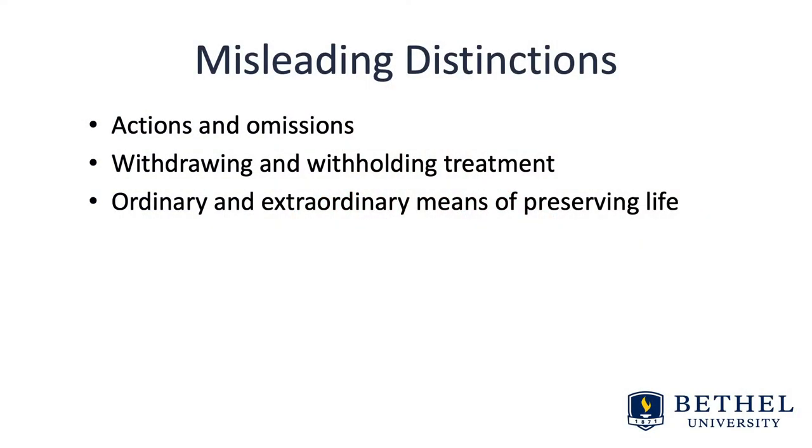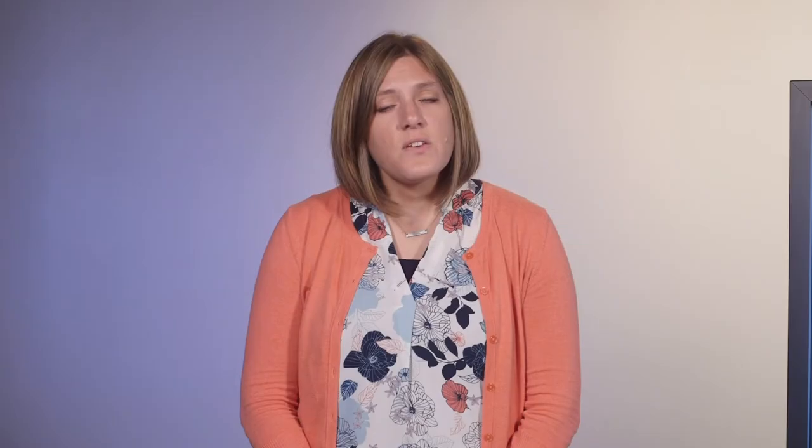The next distinction is futile versus effective treatment. This became an issue with the increased emphasis on patient autonomy. If a patient or family requests treatment that a provider deems inappropriate, the provider is being asked to act in contradiction to her professional judgment. This distinction can seem useful because once a treatment is determined to be futile, the provider does not have an obligation to provide it even if it is the patient or family's wish. However, a recurring theme is that the distinction between futile and effective treatment is just not always clear and objective.